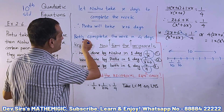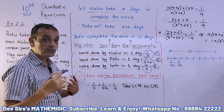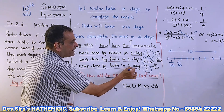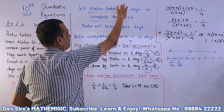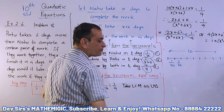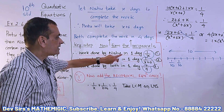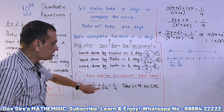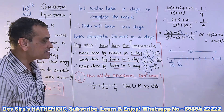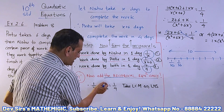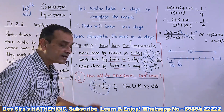Now the reciprocal of the third equation: both complete the work in four days, so work done by both in one day is 1/4. You just take the reciprocal. So: 1/x + 1/(x+6) = 1/4. You can add these. Work done by Nishu in one day plus work done by Pintu in one day equals work done by both — that is 1/4. That is how you form this equation.